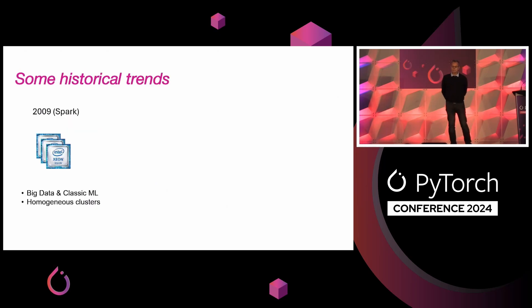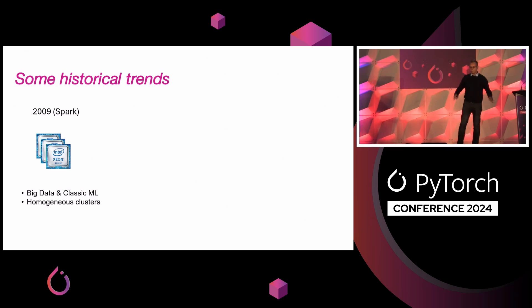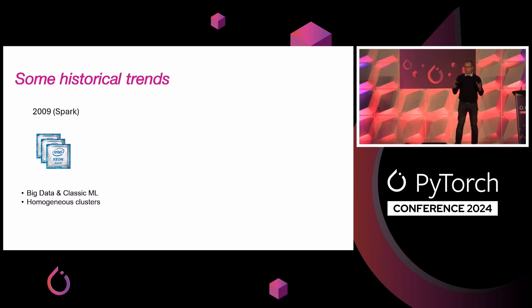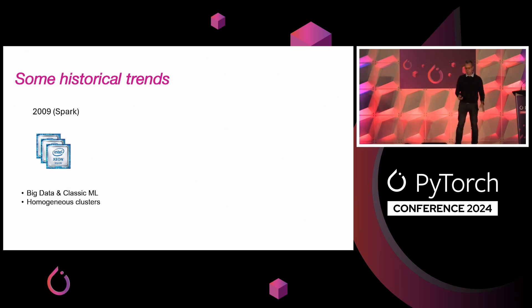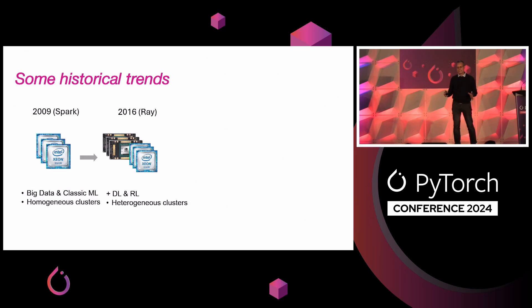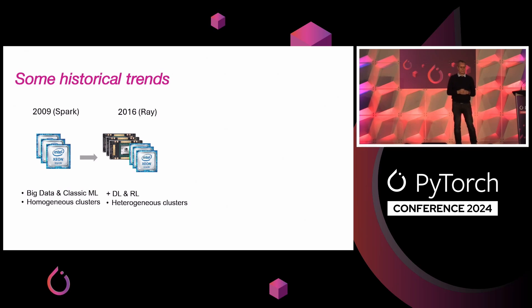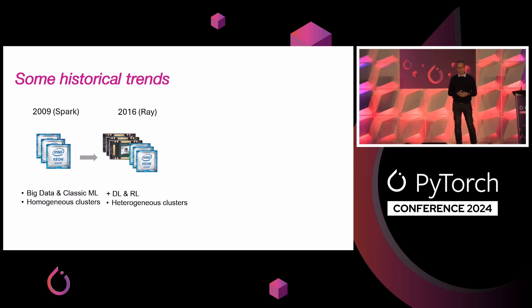More historical context. When we started to work on Spark, back in 2009, we focused on scaling big data and classic machine learning applications. And we were doing that on clusters which are pretty much homogeneous — most of the nodes are pretty much the same, some CPUs and some storage. Fast forward to 2016, when we started to work on Ray, things changed a little bit — the rise of deep learning and reinforcement learning. The clusters themselves became more complicated because now they have to include GPUs, which are indispensable for supporting these workloads.